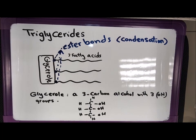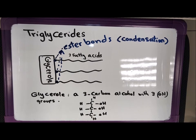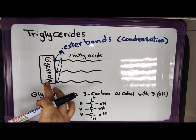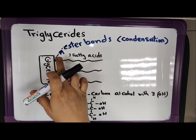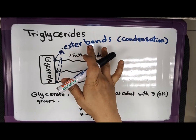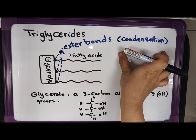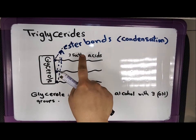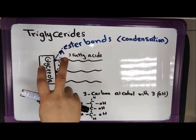We continue with the lipids and the structure of the triglycerides. This type of lipid consists of one glycerol molecule connected to three fatty acid molecules through ester bonds, which are formed during a condensation reaction. In the condensation reaction, a water molecule is produced, and an ester bond, which is a covalent bond, joins one glycerol molecule with three fatty acids.